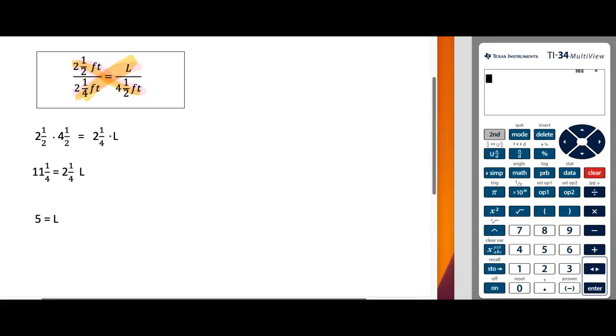Now we can do this with our calculator, and so I'm going to take a moment and show you how to type this into your calculator. First of all, we need to multiply 2 and a half times 4 and a half.